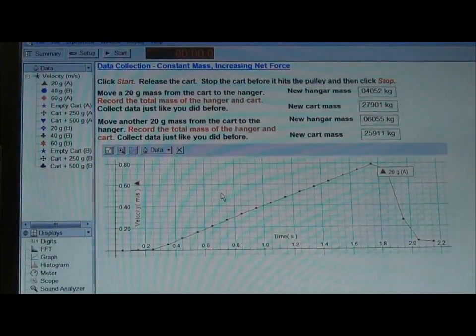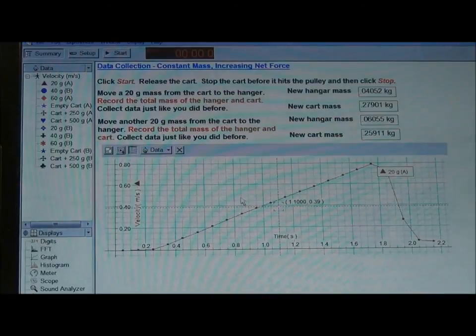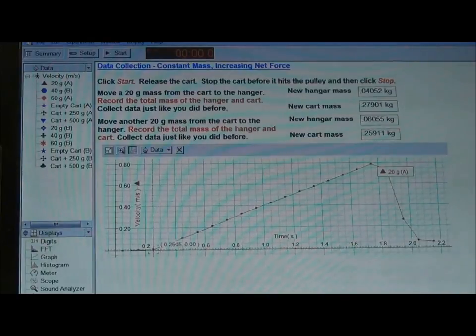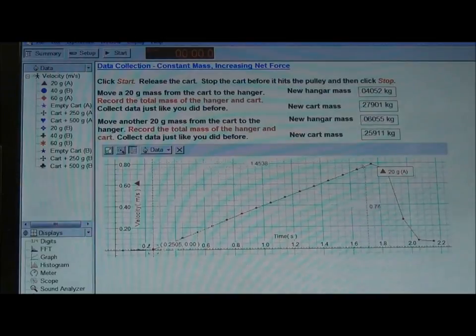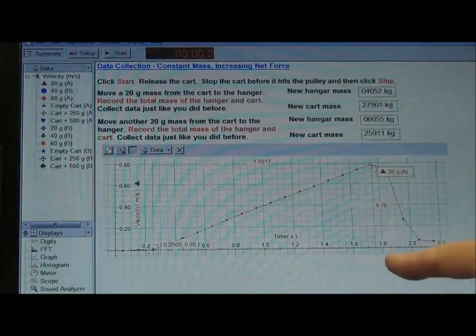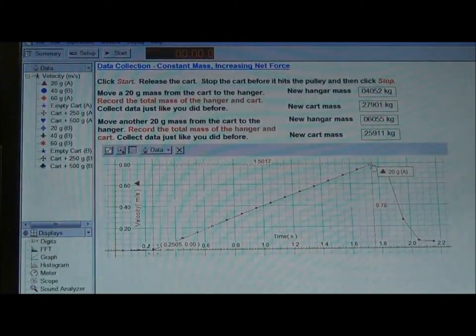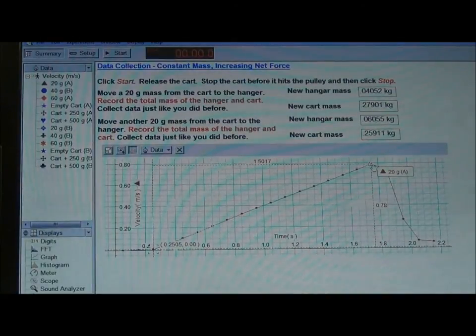Once we have data, we want to get the slope of our velocity time graph. We're going to select the smart tool as we have previously in other labs. Move the smart tool down to the bottom portion of your expression. Pull on the corner. I now see that I can do rise over run 0.78 divided by 1.5017. That would give me the slope for this particular velocity time graph.